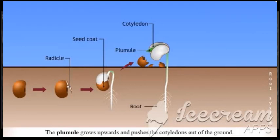The plumule grows upwards and pushes the cotyledons out of the ground. It forms the shoot system.